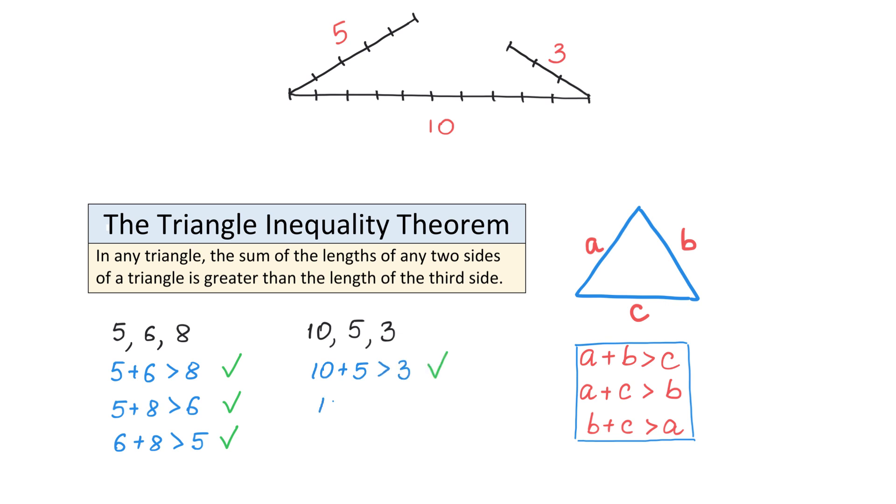Now, let's add 10 and 3. 10 plus 3 is 13, and 13 is greater than 5. And at last, we will check if 5 plus 3 is greater than 10. 5 plus 3 is 8, and 8 is less than 10. So, if at least one of these conditions does not work, then we cannot use these numbers to form a triangle.